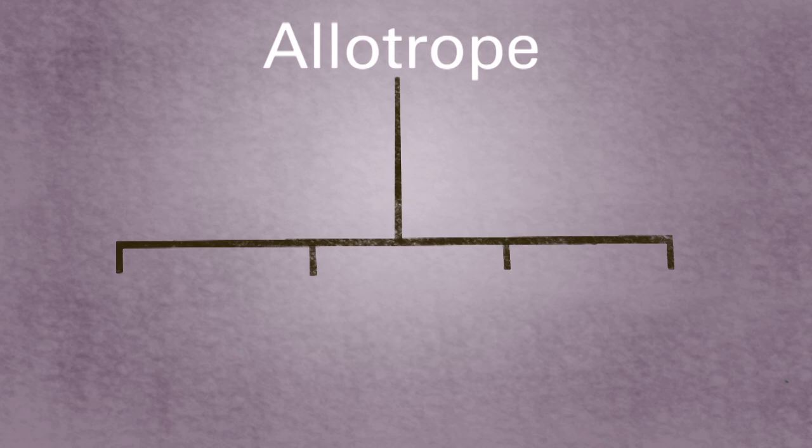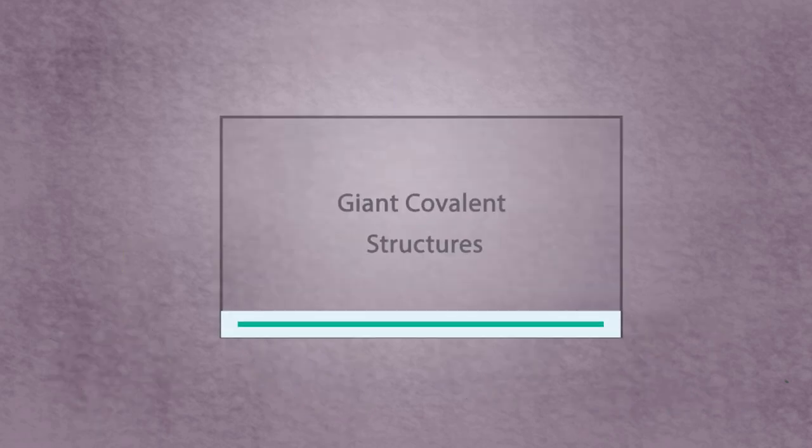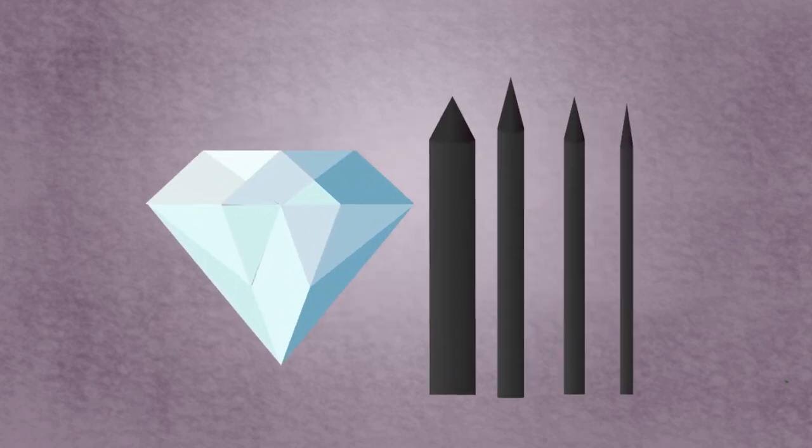The term allotrope refers to different forms of the same element. In our giant covalent structures lesson, you may have learned about the structure of diamond and graphite.